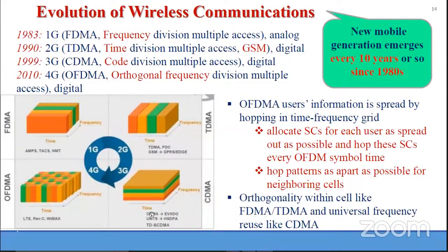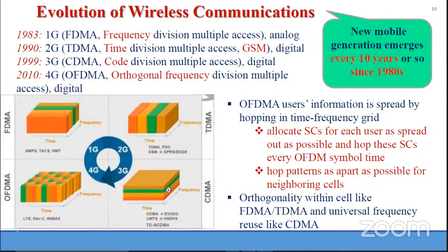The third generation uses code-division multiplexing. All users can transmit simultaneously, overlapping in both the time domain and frequency domain, because every user can use the entire bandwidth. This is called a wideband system.